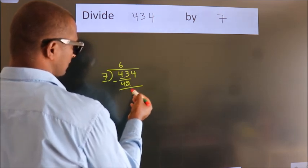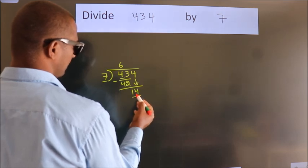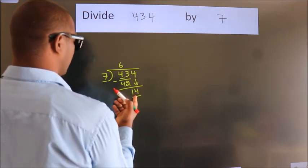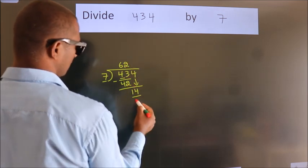After this, bring down the beside number. So 4 down. So 14. When do we get 14? In the 7 table. 7 times 2 equals 14.